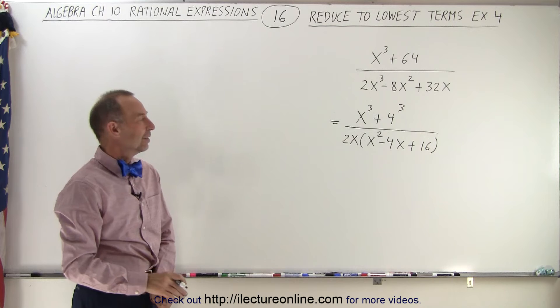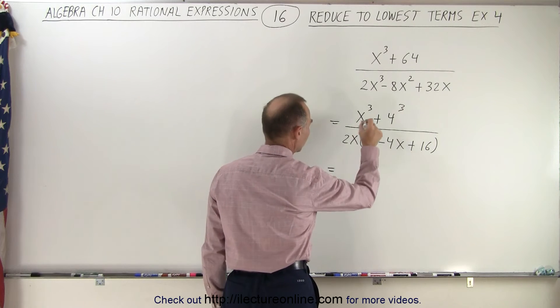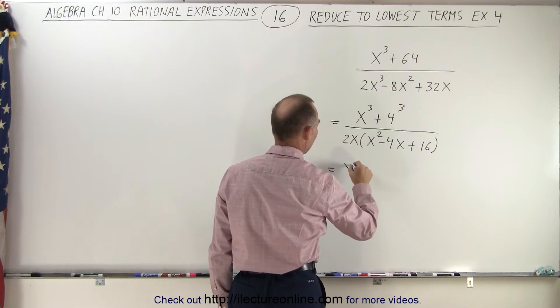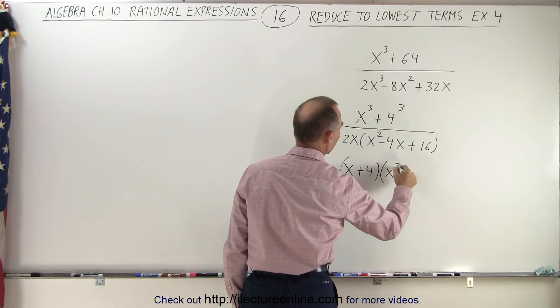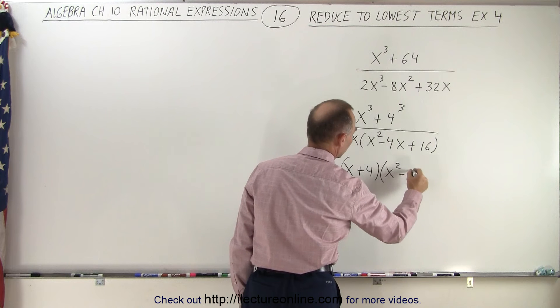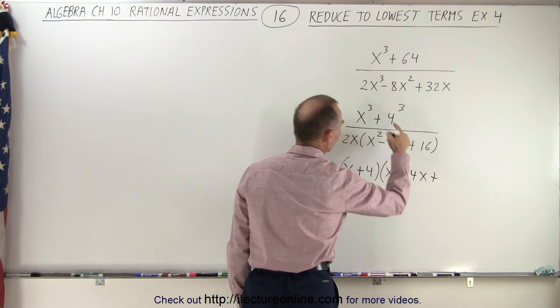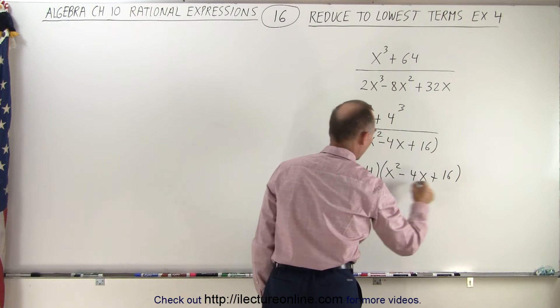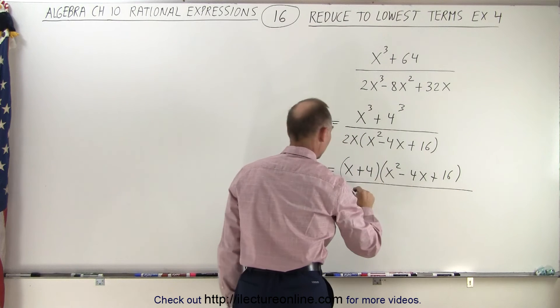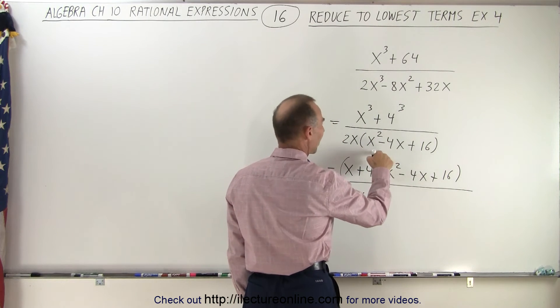Now we can go ahead and factor that. In the numerator, we get x plus 4 times x squared minus 4x (the product of the two terms) plus 16 (the last term squared), all divided by 2x. Can we factor this?